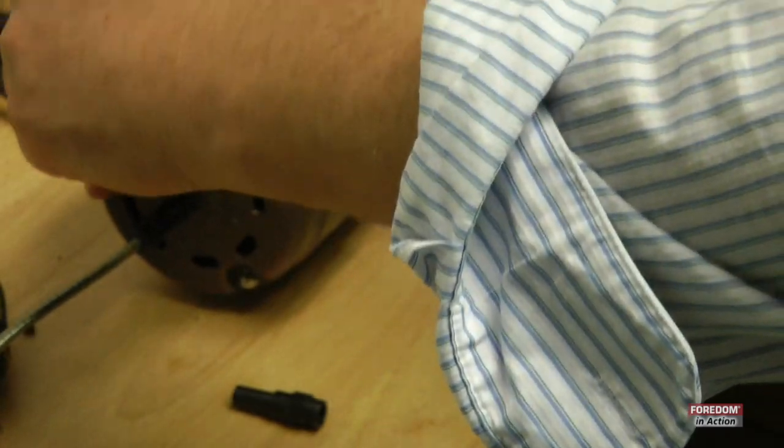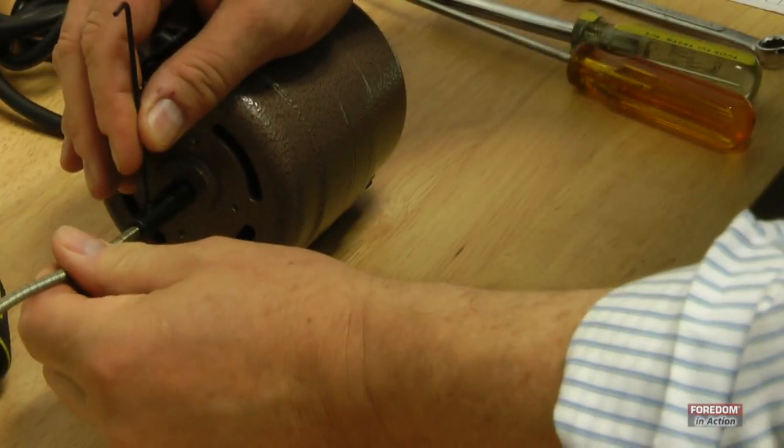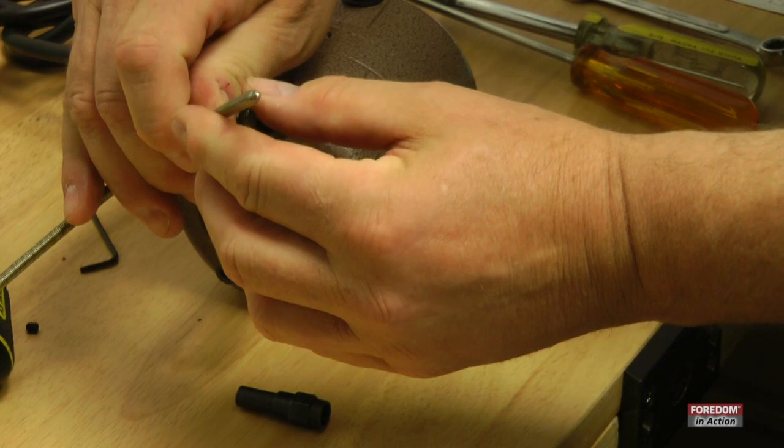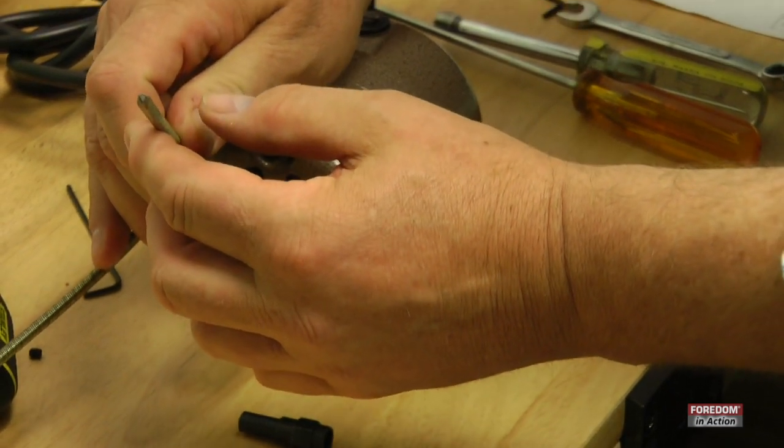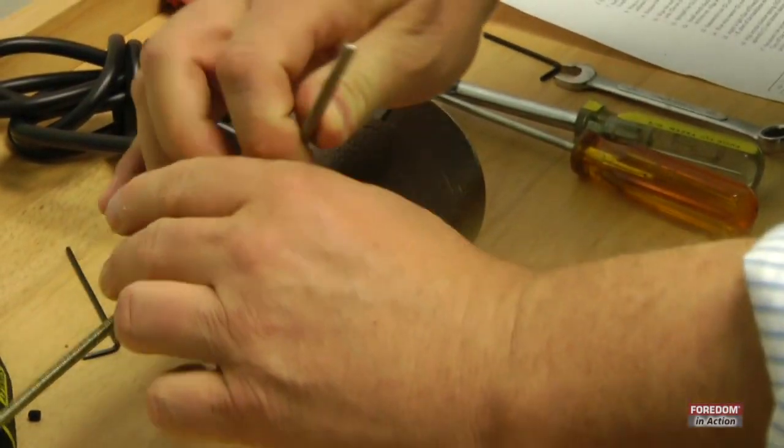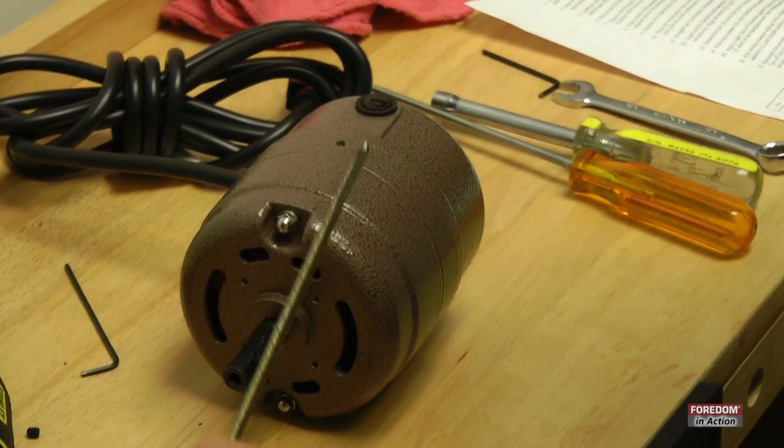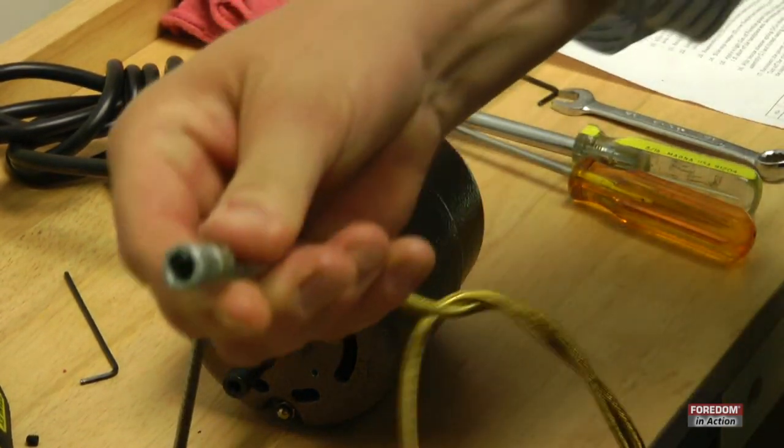Both set screws, there's one on either side, and then the shaft goes out. As you can see, it's a square tip, and you're going to be changing it to one with a coupling.